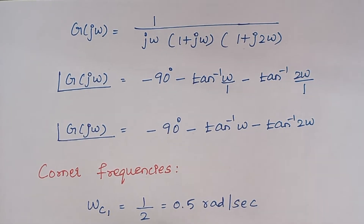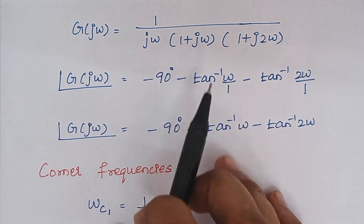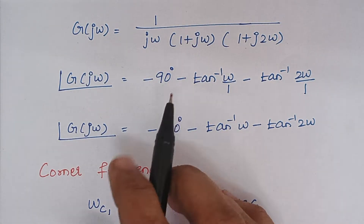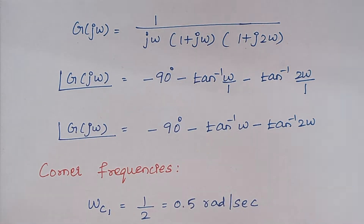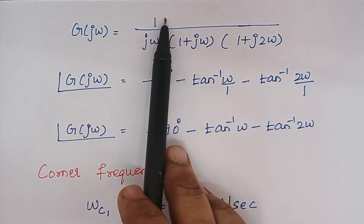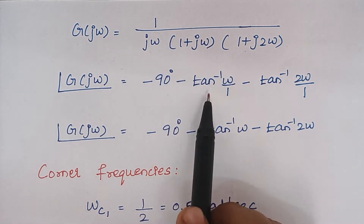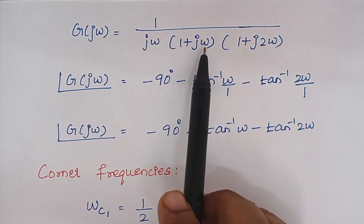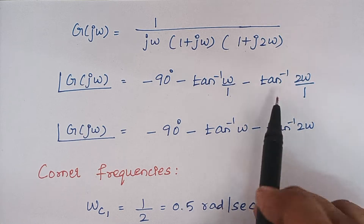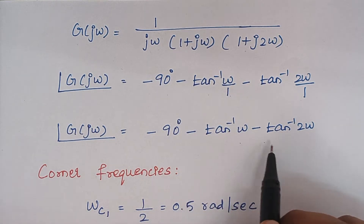Next, we are going to find the expression for the phase plot. We have replaced S with jω. Calculating the angle using the basic formula: tan inverse of imaginary term divided by real term. An ω term contributes an angle of 90 degrees. Since this term lies in the denominator, shifting it to the numerator gives minus 90. Then tan inverse of ω by 1, minus, and tan inverse of 2ω by 1, minus. So the simplified expression is: minus 90 minus tan inverse of ω minus tan inverse of 2ω.